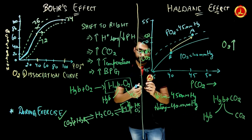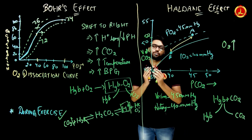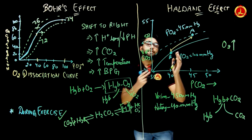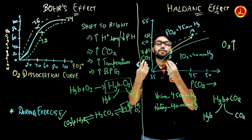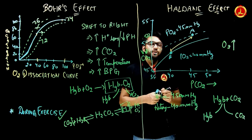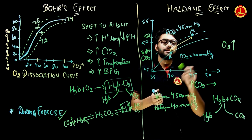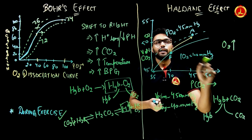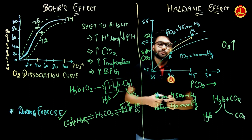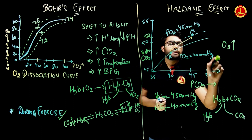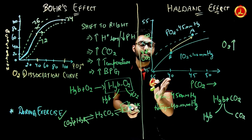The Haldane effect is essentially opposite to the Bohr effect. In the Bohr effect, carbon dioxide increases and oxygen dissociates from hemoglobin. In the Haldane effect, oxygen increases and carbon dioxide dissociates from hemoglobin. This happens in the lungs, where the partial pressure of oxygen inside the lungs is 40 mmHg and on the venous capillary side it is 45 mmHg.